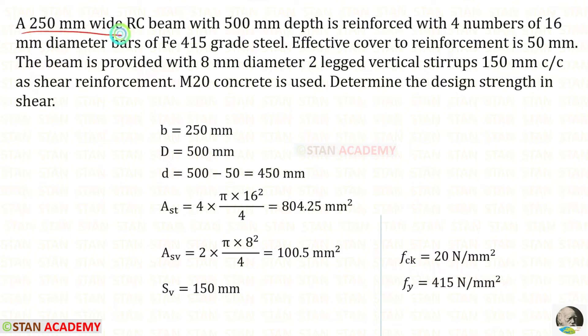A 250 mm wide RC beam, the width b is given as 250 mm with 500 mm depth. The overall depth D is given as 500 mm, is reinforced with four numbers of 16 mm diameter bars. Using this data, we can find AST. For that, we will get 804.25 mm square. Fe415 grade steel is used. Effective cover to reinforcement is 50 mm, D dash is 50 mm. We know that the effective depth d will be D minus D dash. So, 500 minus 50, it will be 450 mm.